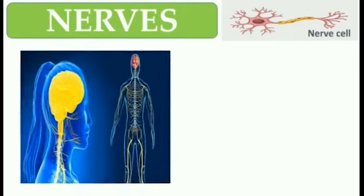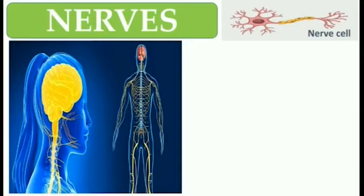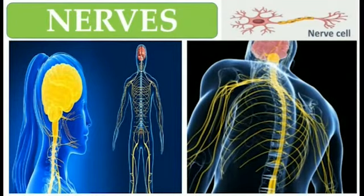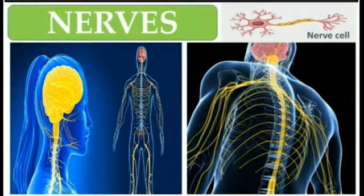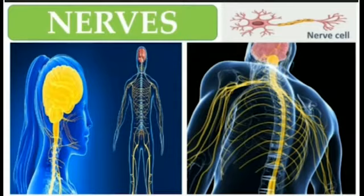In this picture you can see how the nerves look like. The nerves are running throughout the body, as you can see in this picture. Nerves are defined as a long thread-like structure that carries messages between the brain and other parts of the body.